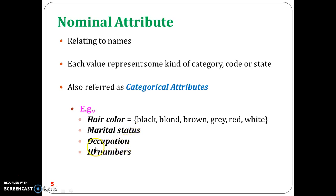Similarly, occupation — there are any number of occupations, for example teacher, dentist, programmer, farmer, assistant professor, and so on. You have a broad category of data all contributing towards a single name. Hence the name categorical or nominal attribute.